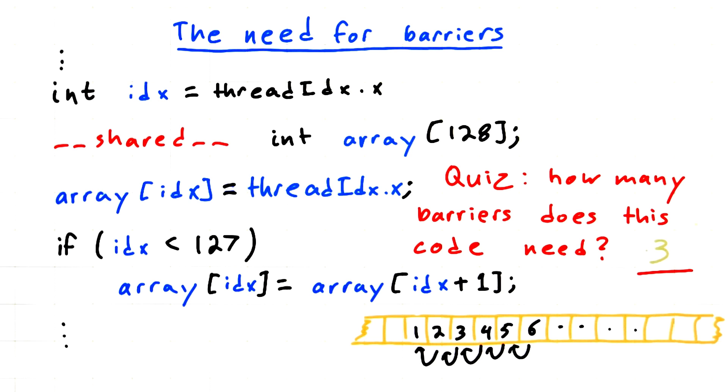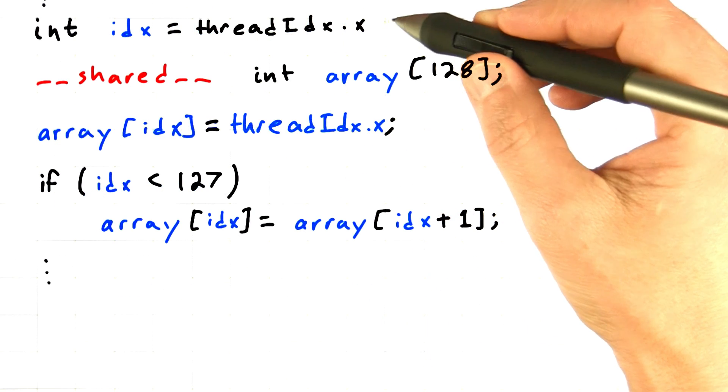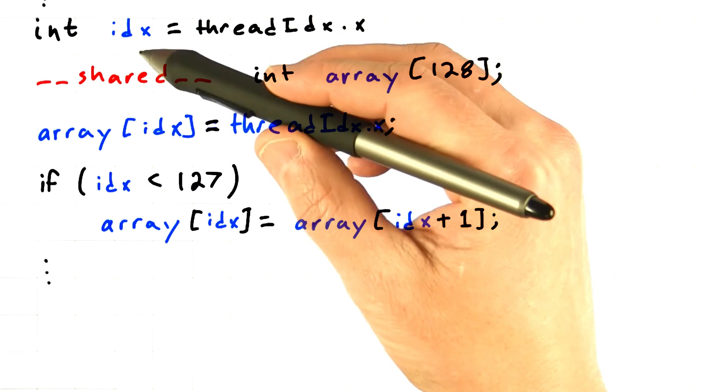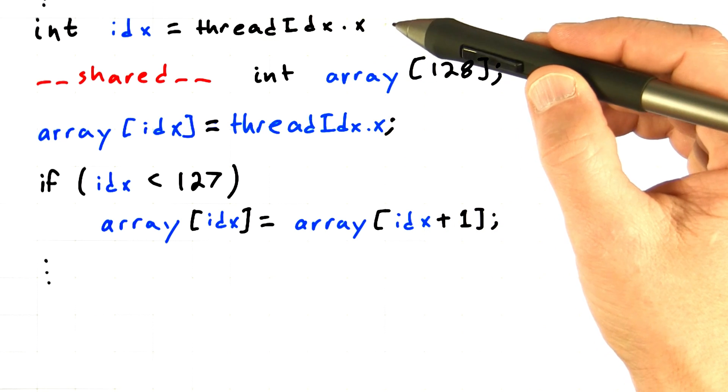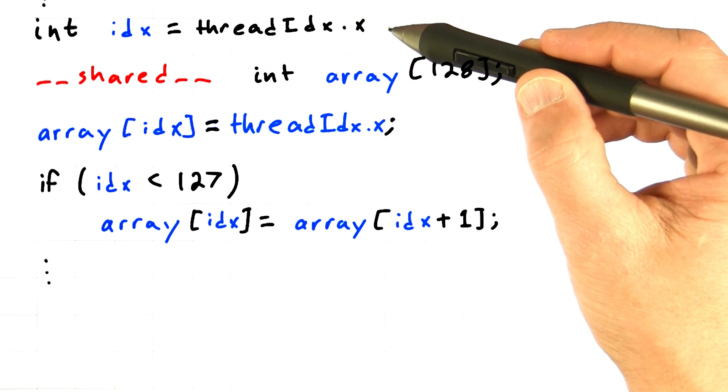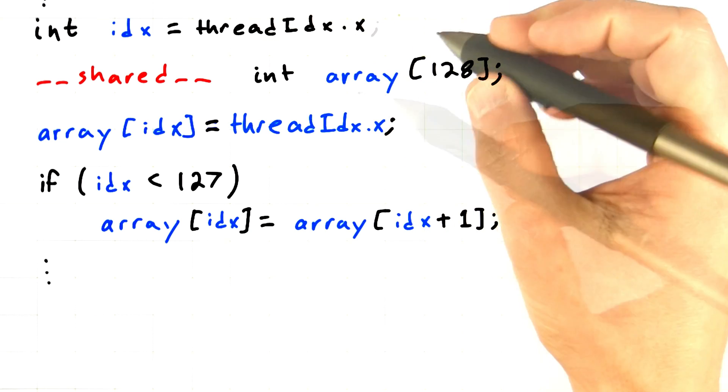So the answer is 3. Why is that? Well, here's the code. Let's take it step by step. First of all, every thread is just setting a local variable equal to its own thread index.